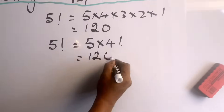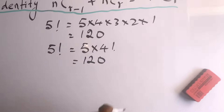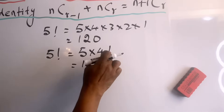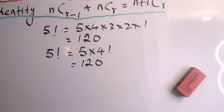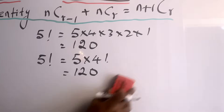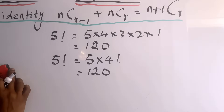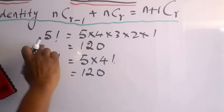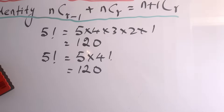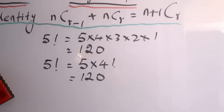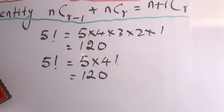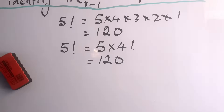The exclamation mark is the sign for factorial. These are the key ideas about factorial. If it is 5 factorial it's easy, but for something like 500 factorial you cannot write all the numbers and find the product, so you must know how to use the calculator.